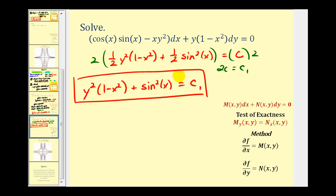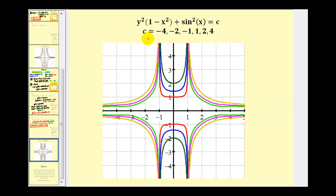To show this graphically, we can select values for c and graph specific solutions to this differential equation. Setting c equal to various constants and graphing the functions, each color represents one solution from the family of solutions — and of course there are many more. I hope you found this helpful.